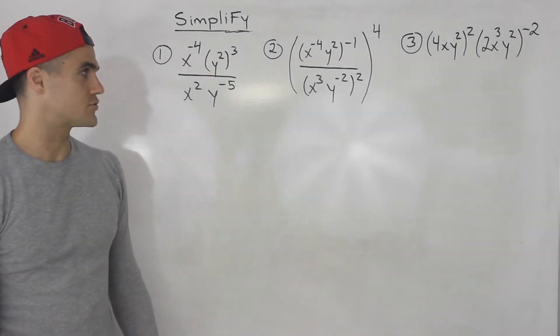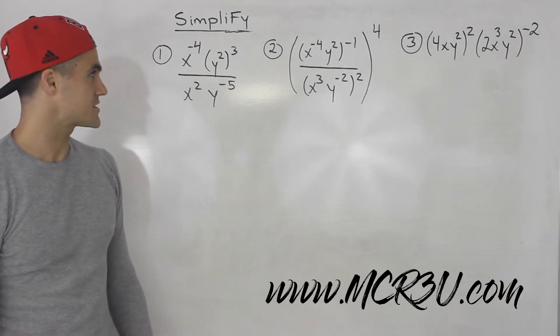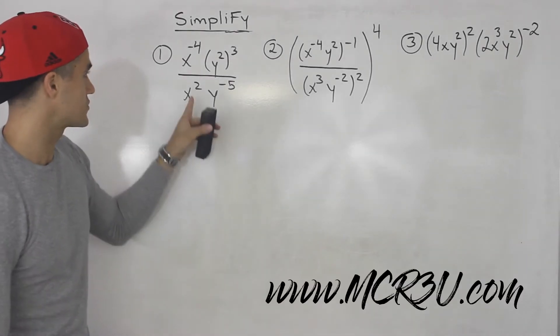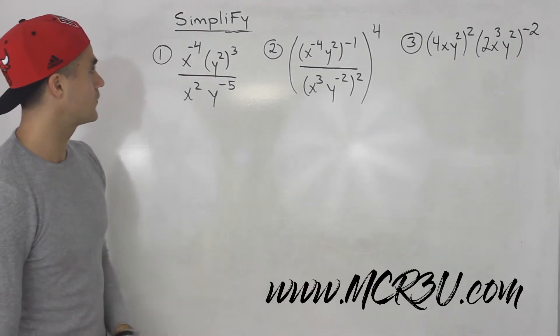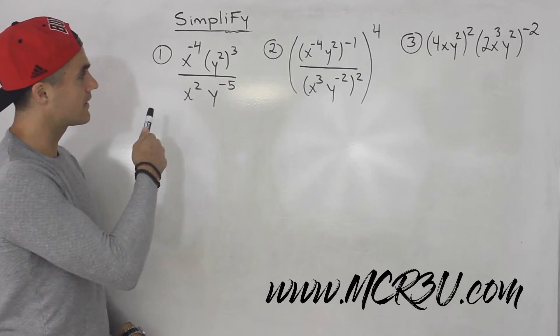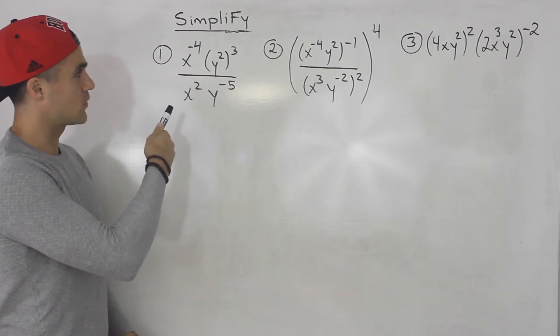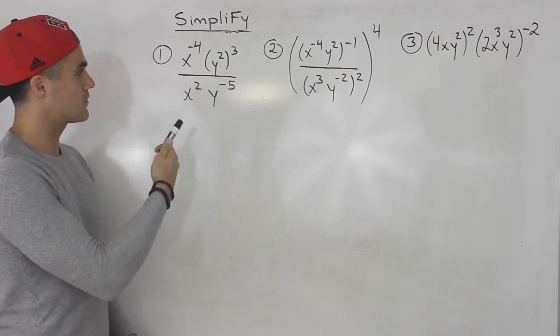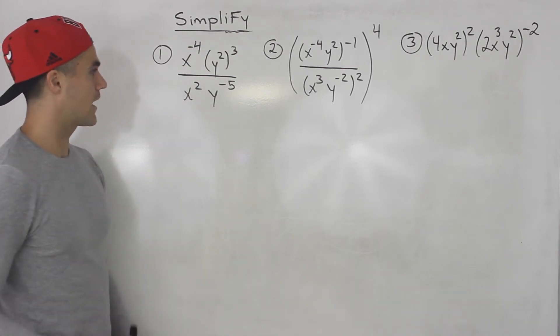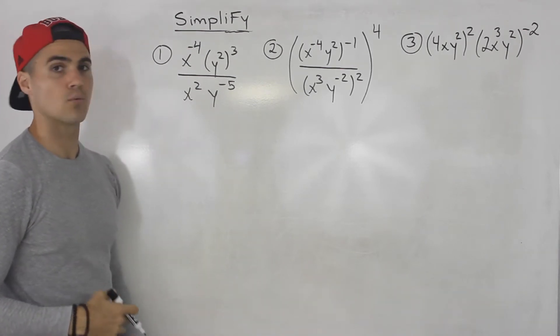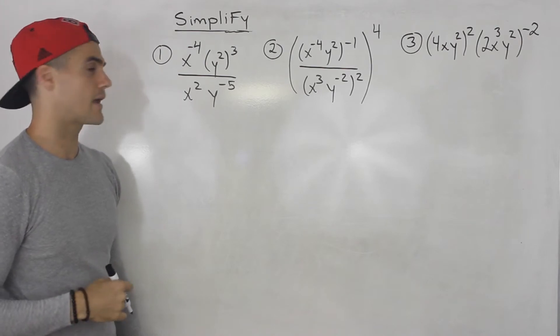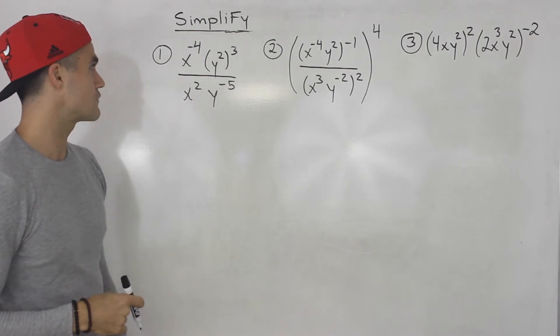Welcome back, everyone. Moving on to more expressions to simplify. Starting off with number one, we have x to the negative four, y squared, all to the power of three, all over x to the power of two, y to the negative five.